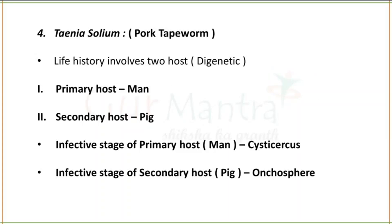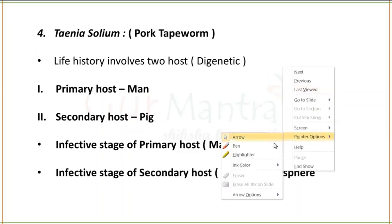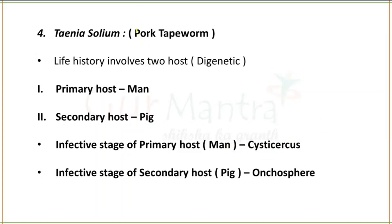Fourth is Taenia solium — the pork tapeworm. It is found in pork. It is digenetic — requires two hosts. Primary host is man; secondary host is pig. The infective stage for the primary host is Cysticercus larva. The infective stage for the secondary host (pig) is Oncosphere. This is a very important point.